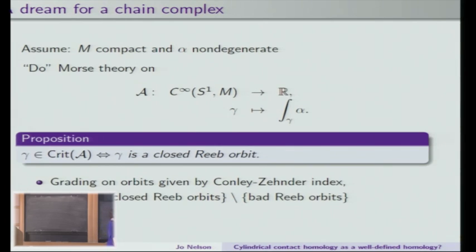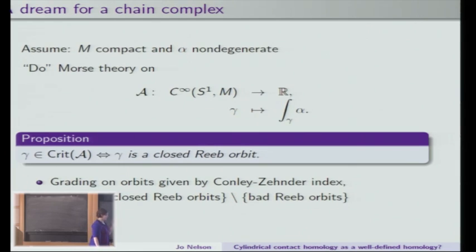We're going to have to throw out bad Reeb orbits. People came up with this rather bizarre terminology: Reeb orbits are said to be bad if when you iterate them, their Conley-Zehnder index doesn't stay always even or always odd — it changes parity. So you throw out all the odd multiples of Reeb orbits whose Conley-Zehnder index changes parity under iteration.